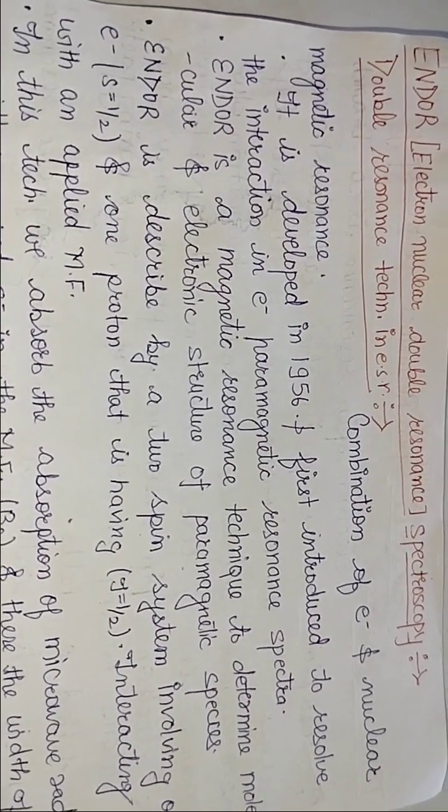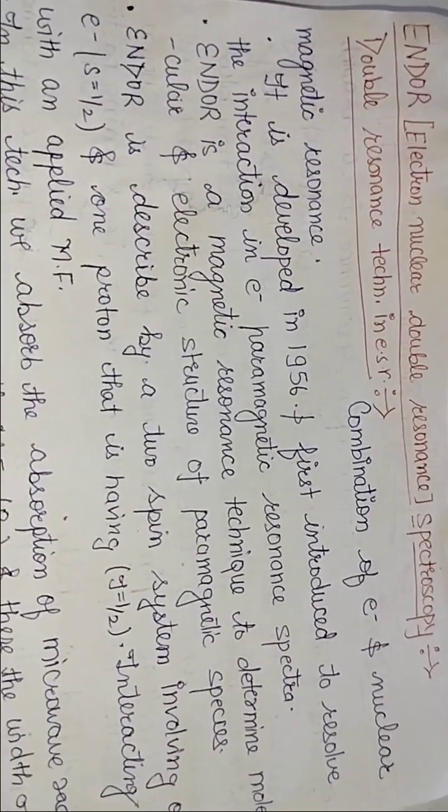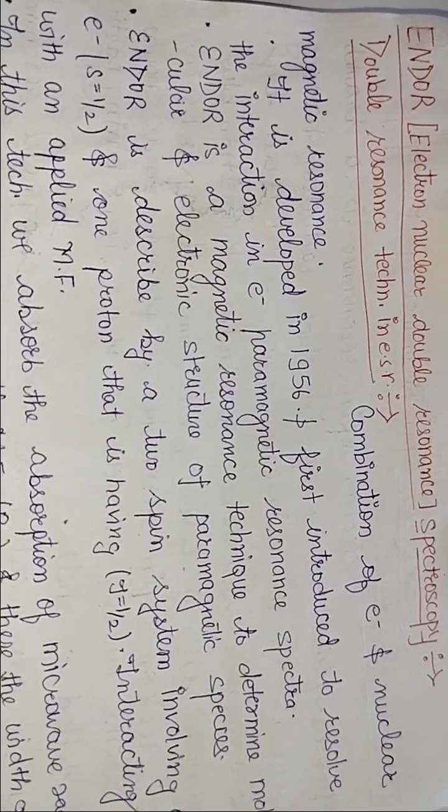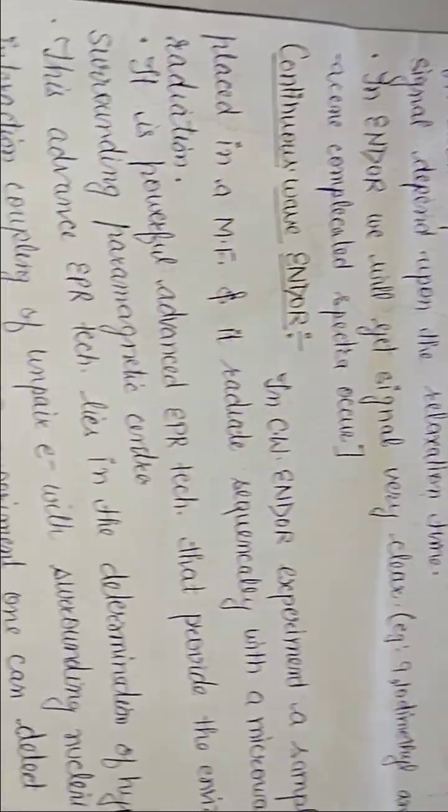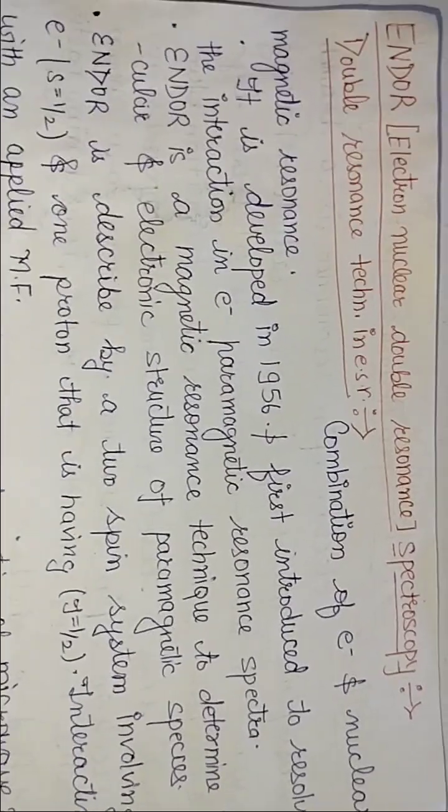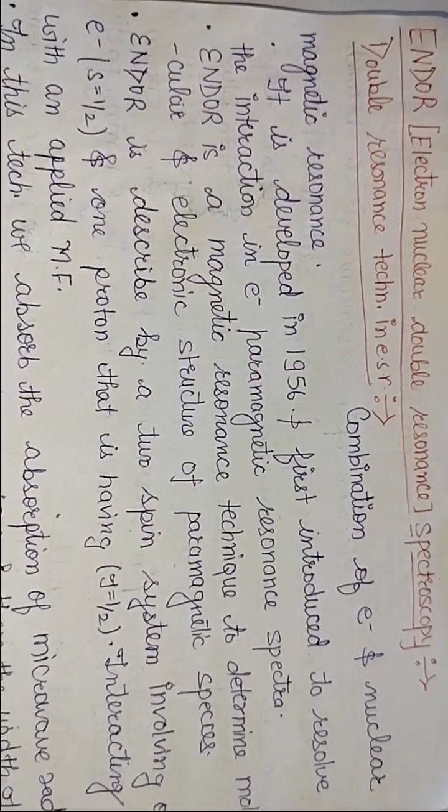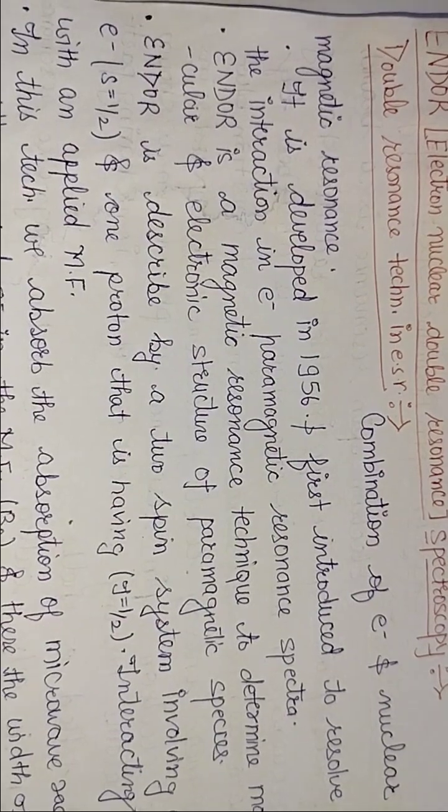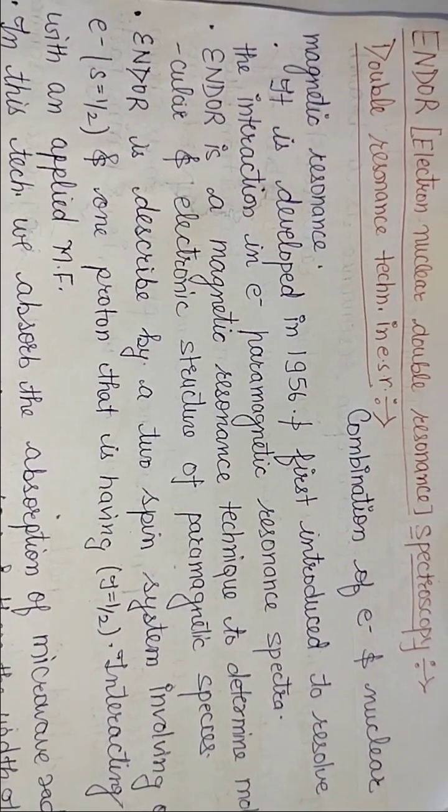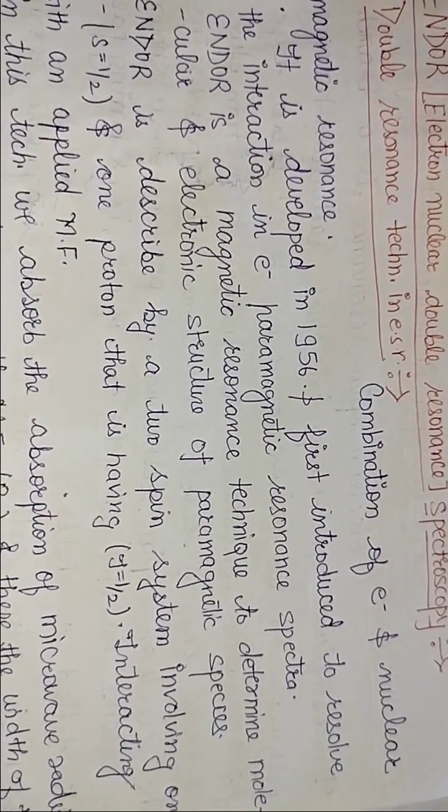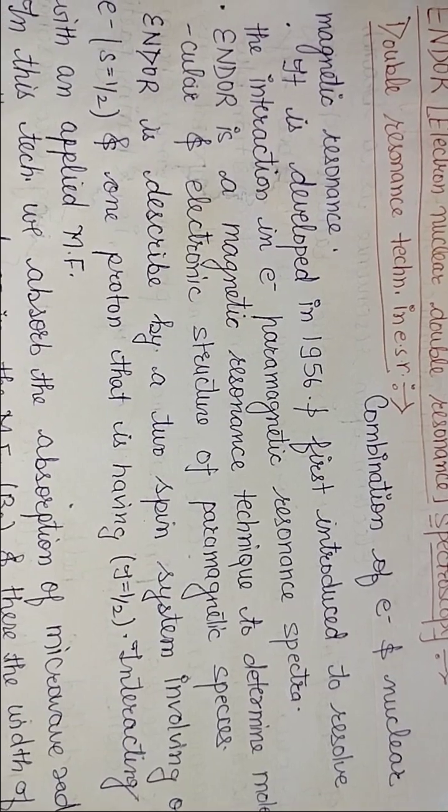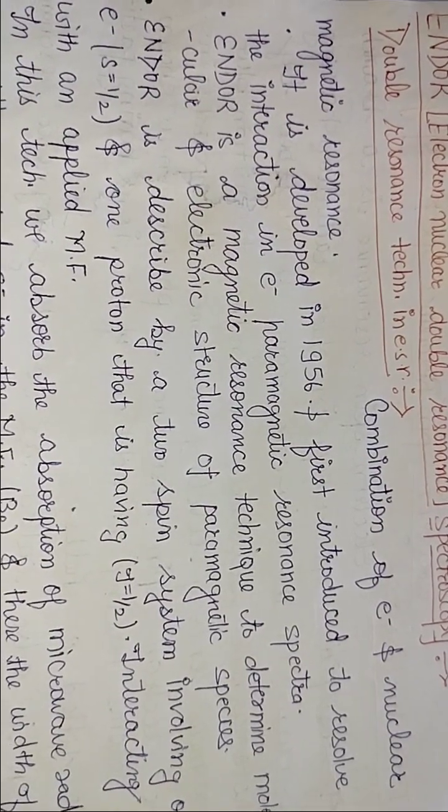Now let's talk about the meaning of electron and nuclear magnetic resonance. Simple thing you have to remember: ENDOR means combination of electron and nuclear magnetic resonance. This was developed in 1956, firstly introduced to resolve the interaction in electron paramagnetic resonance.